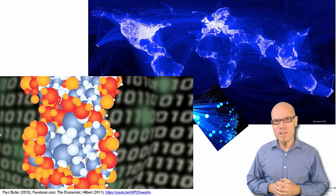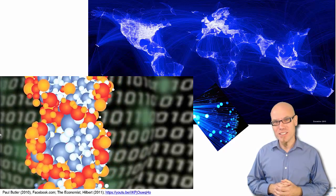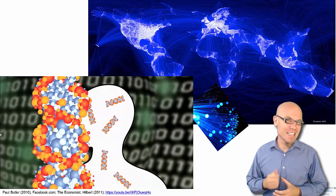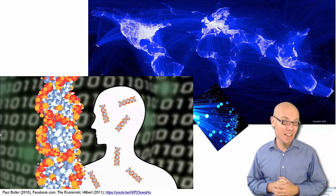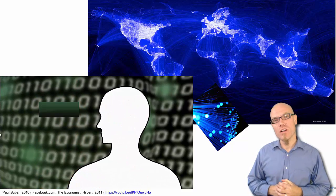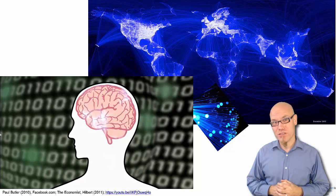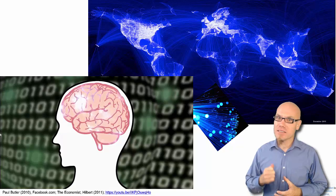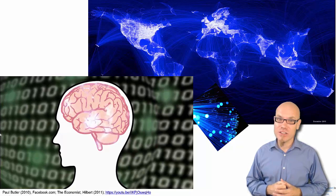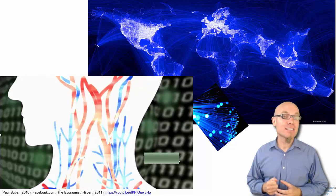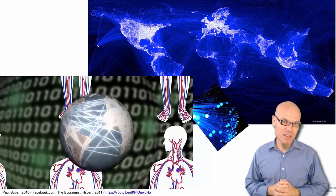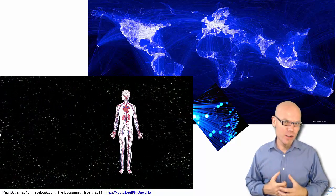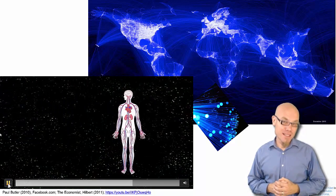For example, all the world's technological storage technologies combined can by now store more information than is stored in the DNA of the 60 trillion cells of a human body. All the world's general purpose computers combined can execute more instructions per second than a human brain can execute nerve impulses per second. And global digital communication networks send more bits around per second as the human inner circulatory system sends blood cells around.